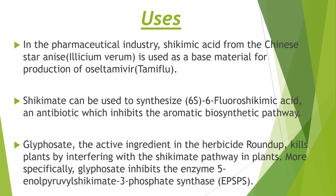The uses of shikimic acid: in the pharmaceutical industry, shikimic acid from Chinese star anise is used as a base material for production of oseltamivir (Tamiflu). Shikimate can also be used to synthesize 6-fluoroshikimic acid as an antibiotic, which inhibits the aromatic biosynthetic pathway. Glyphosate, the active ingredient in the herbicide Roundup, kills plants by interfering with the shikimate pathway — specifically by inhibiting the enzyme EPSPS (5-enolpyruvylshikimate-3-phosphate synthase).